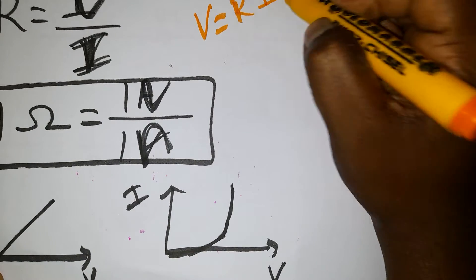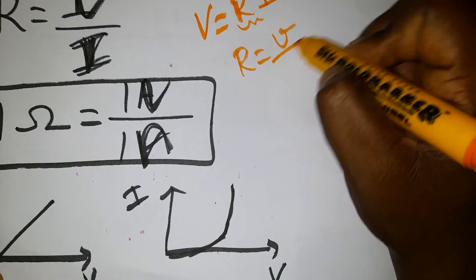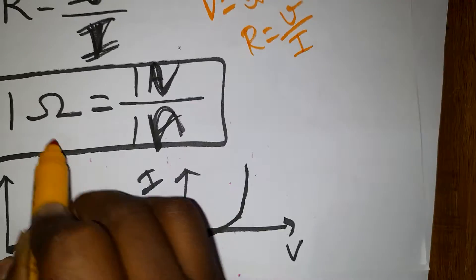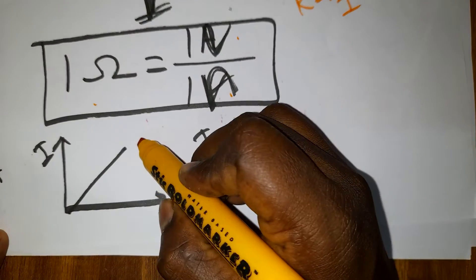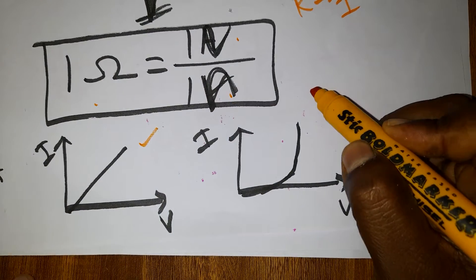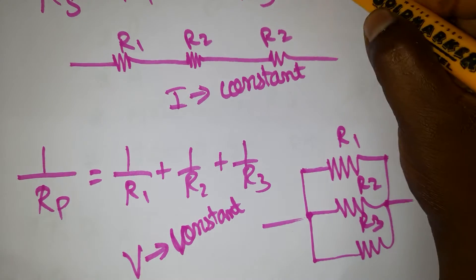R equals V/I. One ohm equals one volt per ampere. The straight line graph represents an ohmic resistor, while the curved graph represents a non-ohmic resistor. Next we have equations for resistance.